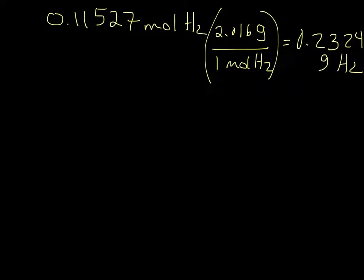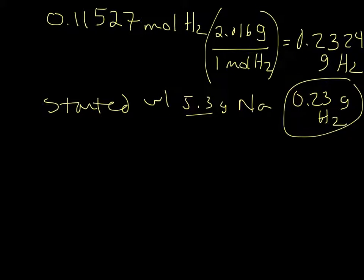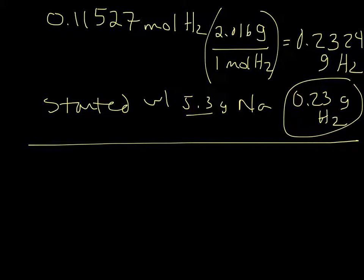Going back to our original problem, we started with 5.3 grams of sodium, so that's two significant figures. Our final answer is 0.23 grams of hydrogen gas. Now I want to mention that you could have done this all in one big problem — that's actually how I do it. I showed it step-by-step so you can see what's going on, but let's write down how you would do it all as one problem.